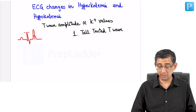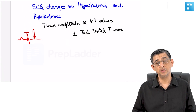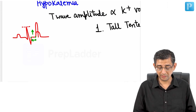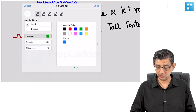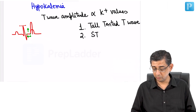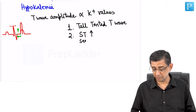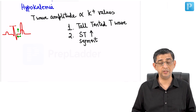The ST segment always follows the T wave. As T wave amplitude rises in hyperkalemia, the ST segment will also start rising. So the second ECG finding to remember is ST segment elevation. From the mnemonic 'ELEVATION' discussed earlier, the letter E stands for electrolytes, and the relevant electrolyte here is hyperkalemia.